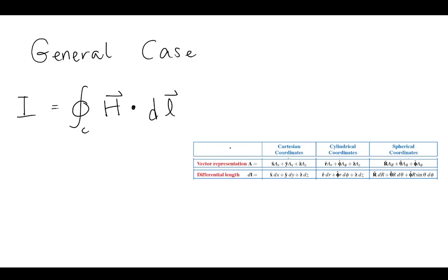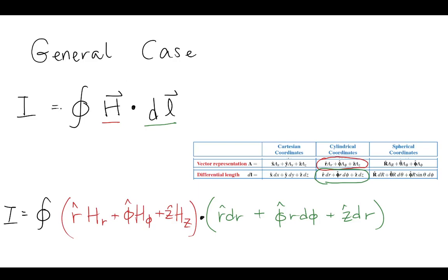Now if we're going to do that integral, we can see that it could end up being sort of complicated. If you had a differential path length like this, you could end up with at least three different integrals that you have to do in cylindrical coordinates, for example.